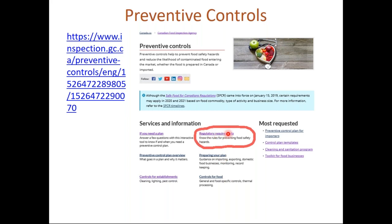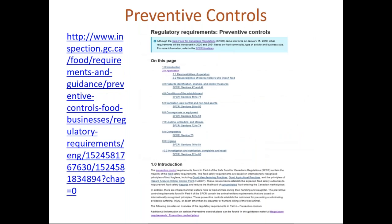If you click the regulatory requirements link, it will lead you to the regulatory requirements of the preventive controls. The information provided there describes which sections of the Safe Food for Canadians Regulations apply to each preventive control. This is something you should read through if you're serious about writing your own preventive controls — even if you're going to hire a consultant, you should still read through it so you understand what that person is doing for you.